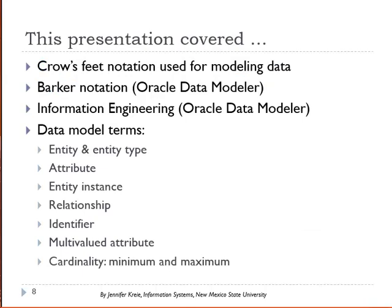So we've covered crow's foot notation for data modeling. We'll see Barker notation and IE notation when we start looking at examples from Oracle data modeler. We've introduced the terms entity, entity type, attribute, entity instance, relationship, identifier, multivalued attribute, and cardinality.